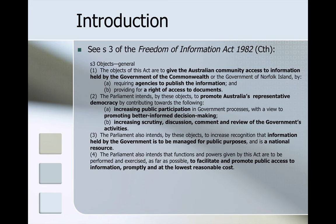So what then are the objects of the Freedom of Information Act? We find this in Section 3 of the Commonwealth Act. The main object is to give the Australian community access to information held by the government of the Commonwealth by requiring agencies to publish information and by providing for a right of access to documents. The Parliament intends by these objects to promote Australia's representative democracy by increasing public participation in government processes, promoting better informed decision-making and increasing scrutiny, discussion, comment and review of the government's activities.